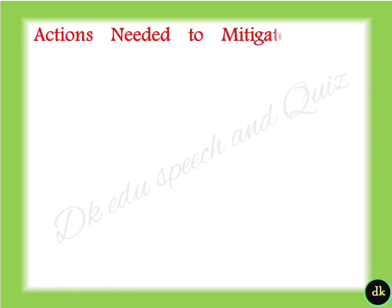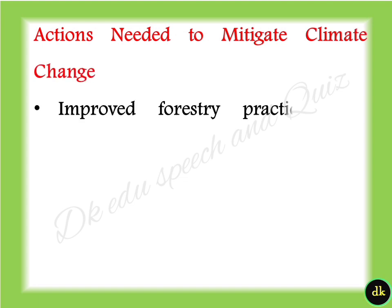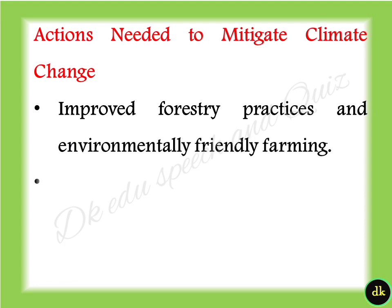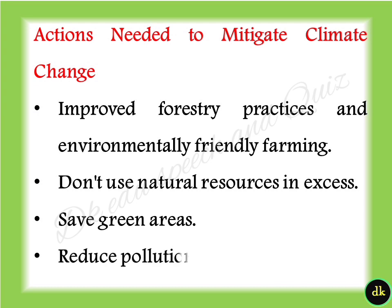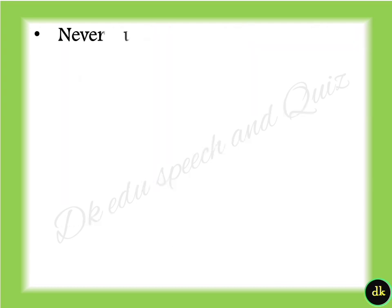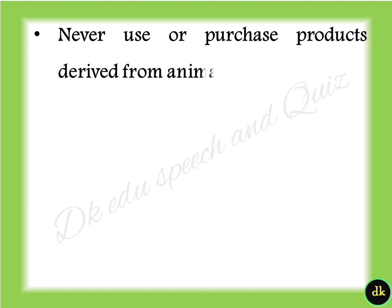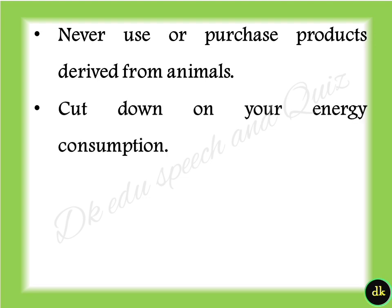Actions needed to mitigate climate change include: improving forestry practices and environmentally friendly farming, not using natural resources in excess, saving green areas, reducing pollution, never purchasing products derived from animals, cutting down on energy consumption, and avoiding the use of plastic.